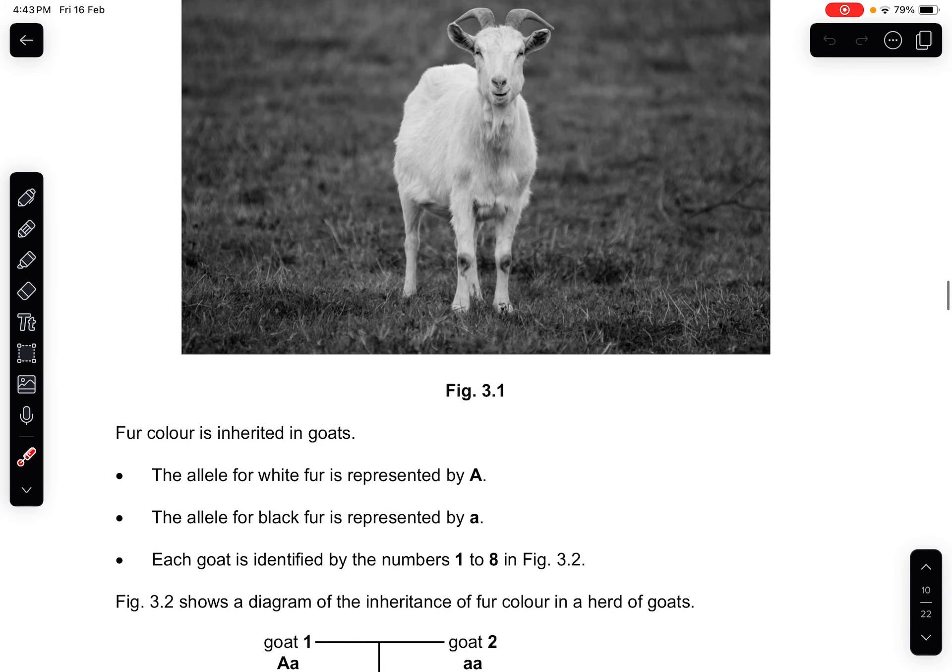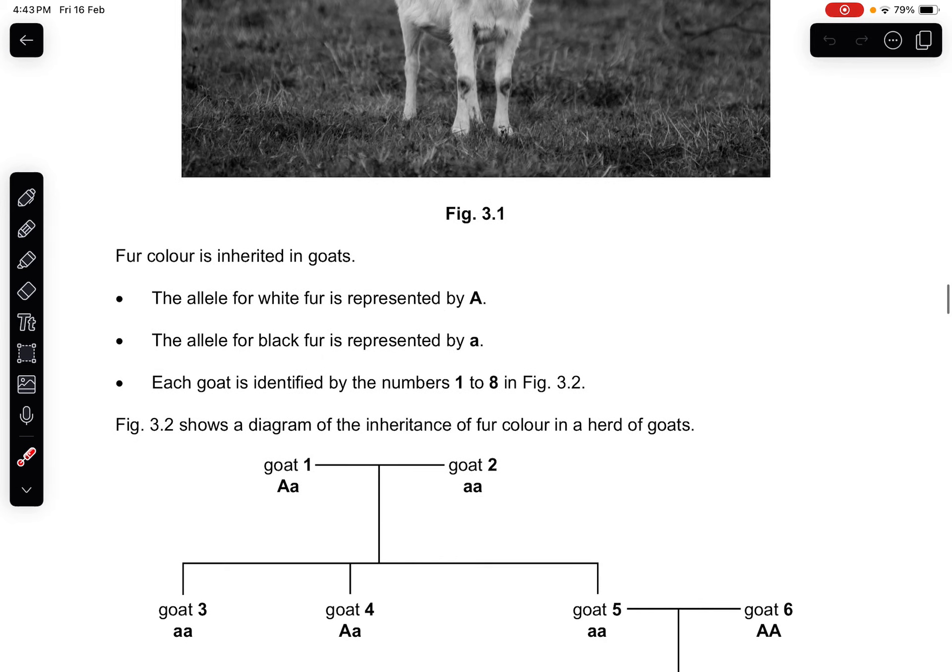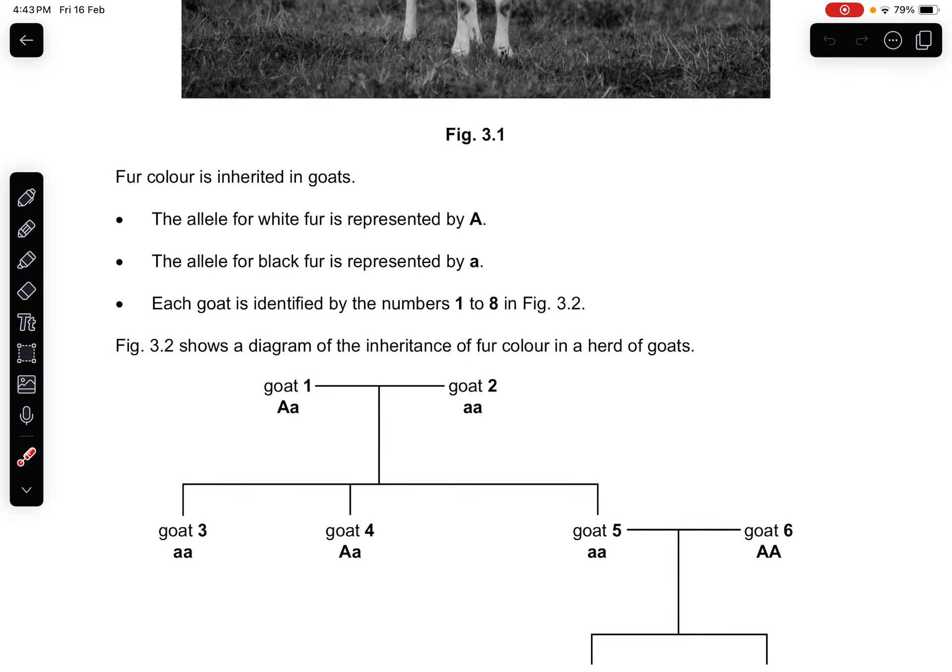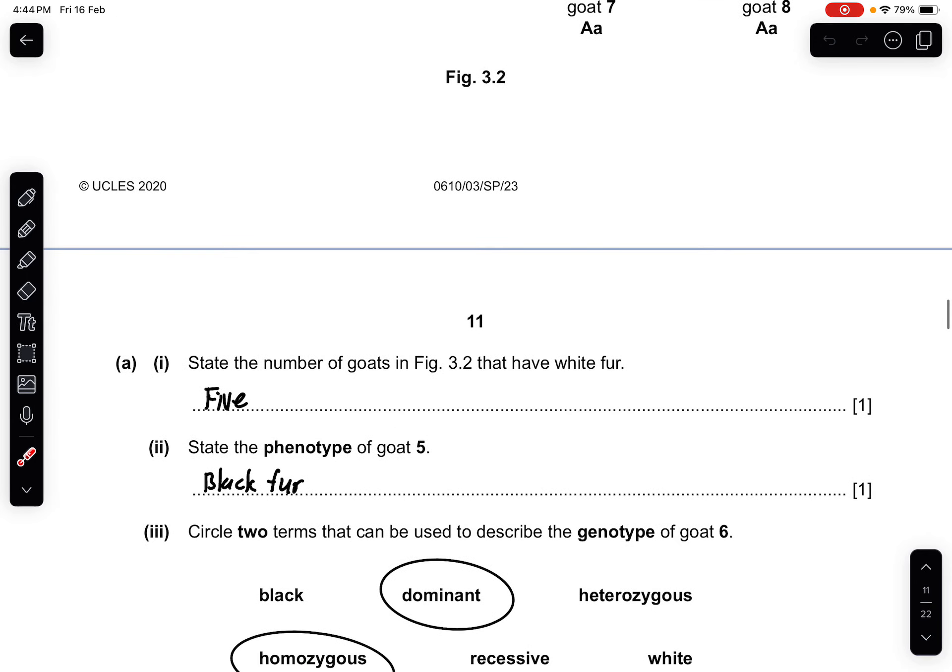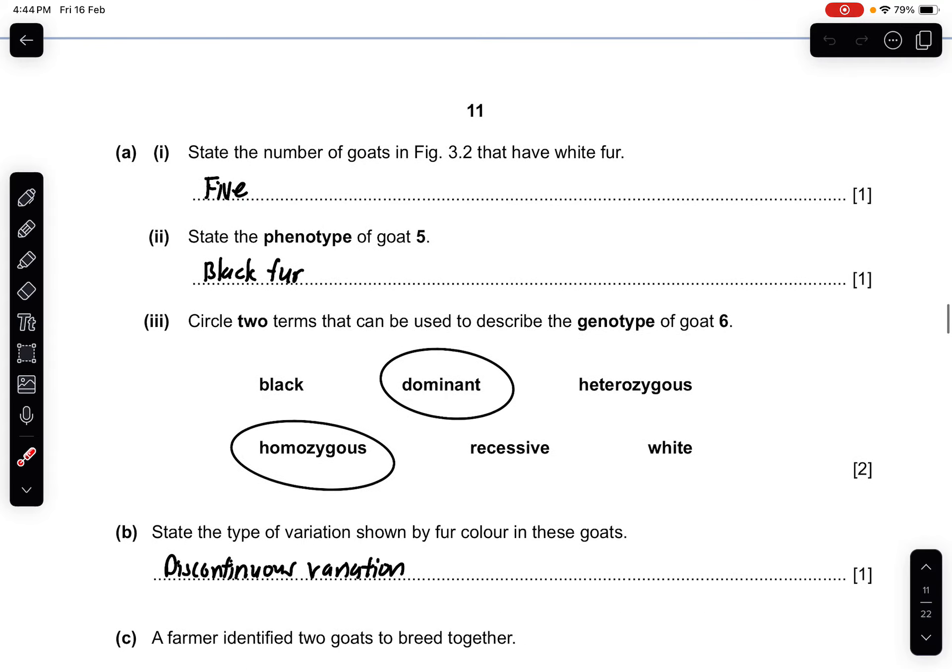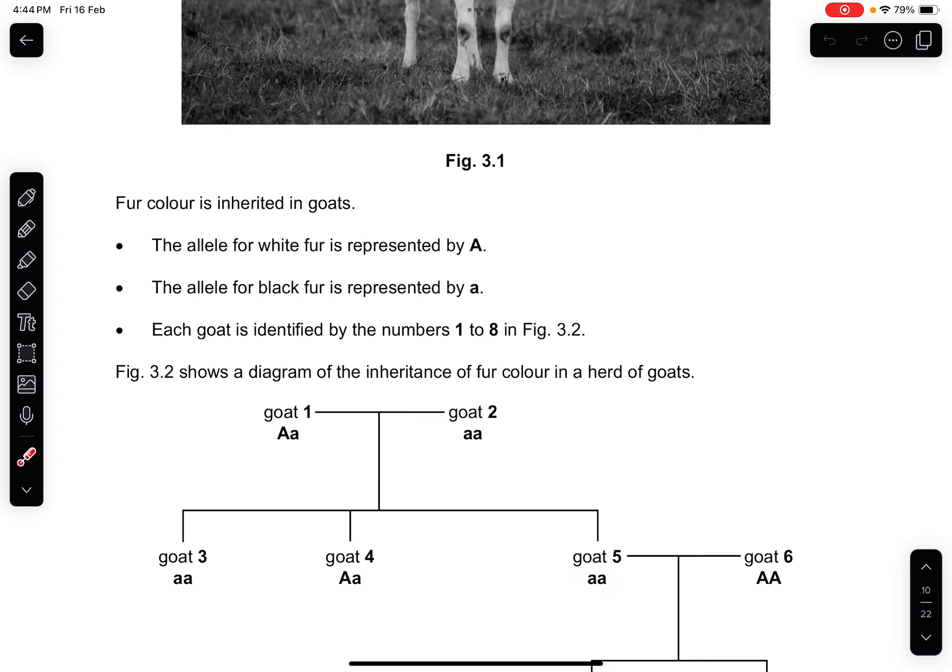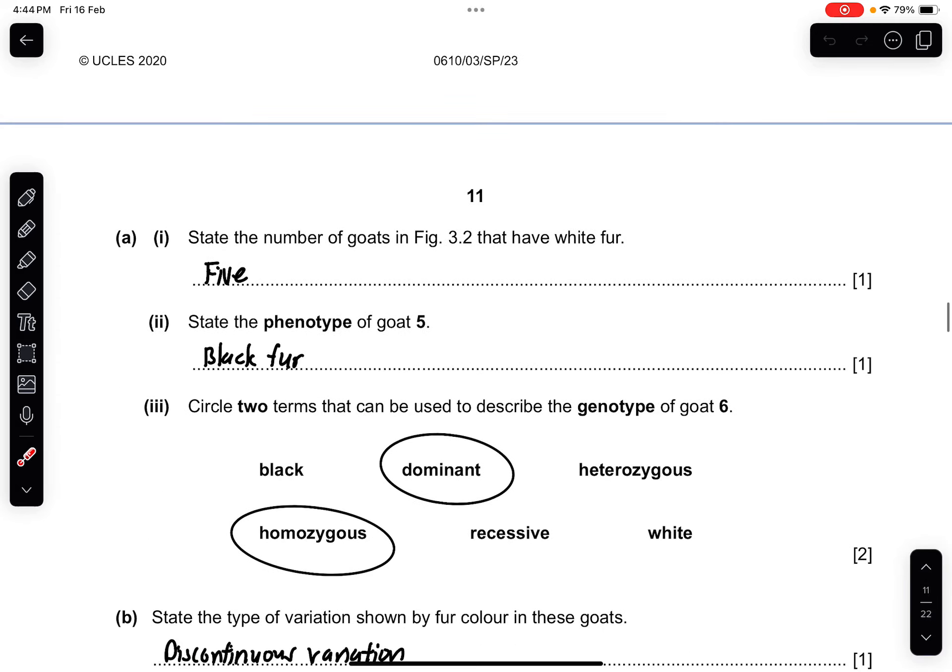Question 3: Figure 3.1 shows a goat with white fur. Fur color is inherited in goats. The allele for white fur is represented by capital A, the allele for black fur by lowercase a. Each goat is identified by numbers 1 to 8 in Figure 3.2. Part A1: State the number of goats in Figure 3.2 that have white fur. There are five in total. Part 2: State the phenotype of goat 5: black fur, because it's homozygous for black fur.